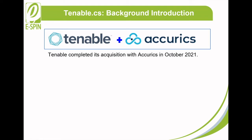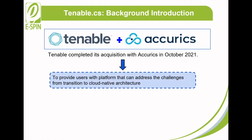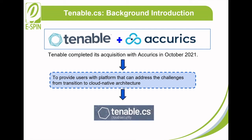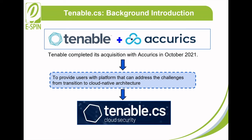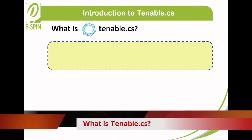It is a platform that secures your cloud native applications while leveraging single and multi-cloud as well as hybrid cloud throughout their entire lifecycle. In order to provide users with a platform that can address the challenges from transition to cloud native architecture as well as the recently acquired Accurics platform, Tenable proudly announces the release of Tenable CS as a solution.